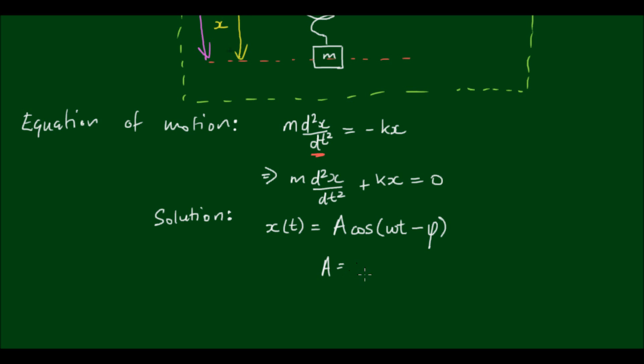So A denotes the amplitude or the maximum displacement. Omega is equal to the square root of the spring constant divided by the mass, and it's also equal to the angular velocity, which is related to the frequency. And phi is the phase of the motion. And these two terms can be found through applying the initial conditions, and this term here is a property of the system.